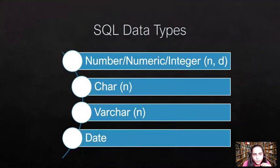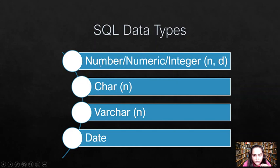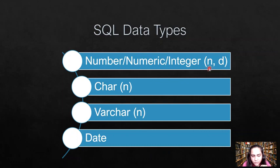Now let's look at SQL data types. These are the main data types, though there are several available and we won't look at all of them. You can see there is a data type called number, or numeric, also sometimes written as integer — they are all the same. After writing this you always specify two things: the size, meaning how many digits you're allowing.